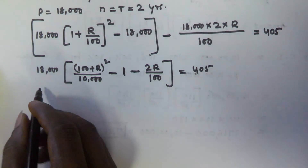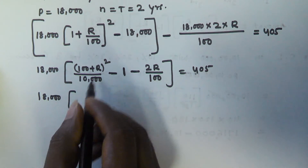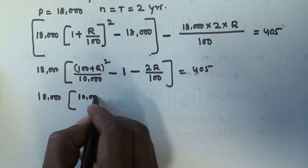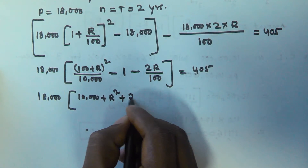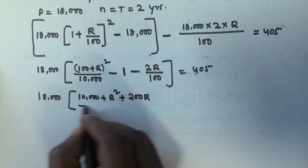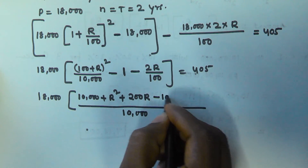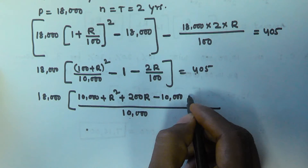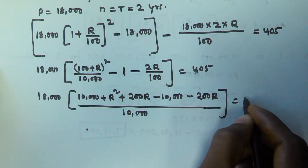Now expanding (100 + R)², using the formula (a + b)² = a² + 2ab + b², we get 10,000 + 200R + R². Taking the LCM as 10,000, we subtract 10,000 and 200R accordingly.